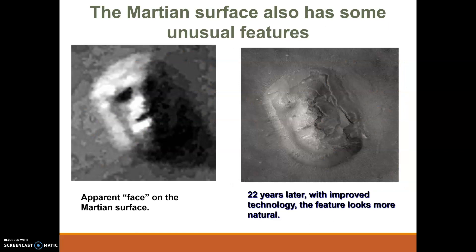Mars also has some unusual features. I'm sure all of you have heard of the Face on Mars — but that was really due to faulty or old technology. With much better improved technology, we can see that it is just some sort of volcano or large mountain on Mars. All these features, like very large mountain-like structures, differ from other planets we've seen.